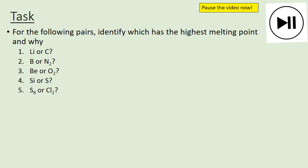Pause the video to answer the questions, then check your answers. For question one — lithium or carbon — lithium is metallic, carbon is giant covalent. Giant covalent has stronger bonds, therefore more energy is needed to break them, so carbon has the higher melting point. For question two — boron or N₂ — boron is giant covalent, nitrogen is simple molecular. Simple molecular is held together by weak van der Waals; giant covalent by strong covalent bonds requiring lots of energy to break. Boron has the highest melting point.